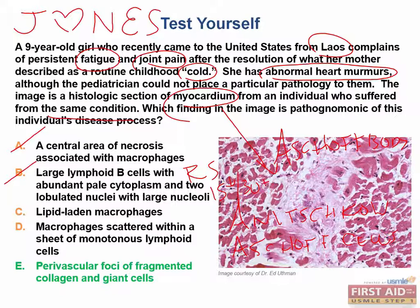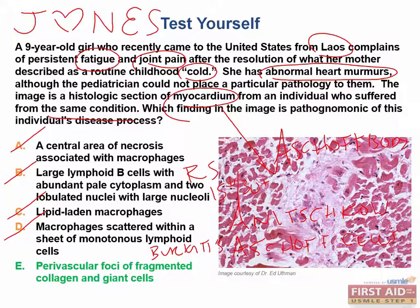Foam cells are part of the atheroma process — they are lipid-laden macrophages. That's definitely not the answer here. A starry sky pattern is a buzzword for Burkitt's lymphoma. Answer D is not correct because macrophages scattered within a sheet of monotonous lymphoid cells is classically describing the starry sky pattern, due to lymphocytes surrounding an area of macrophages that have consumed tumor cells and tumor debris.